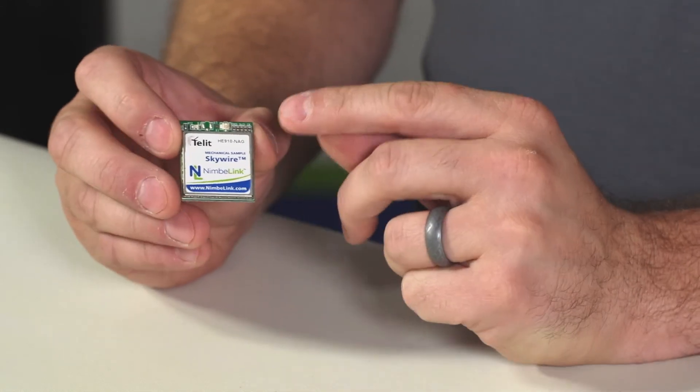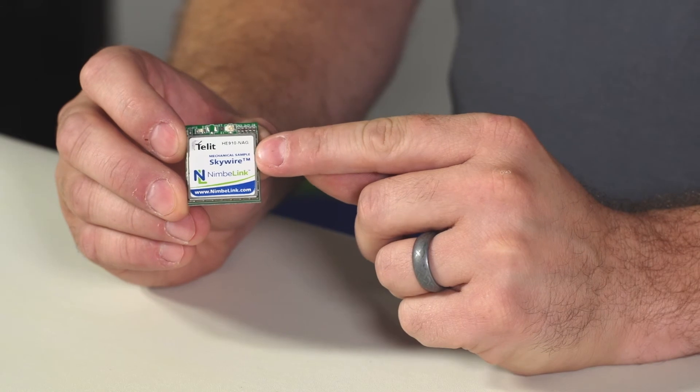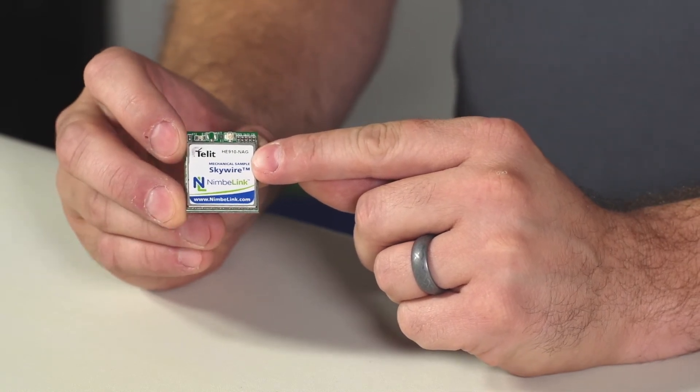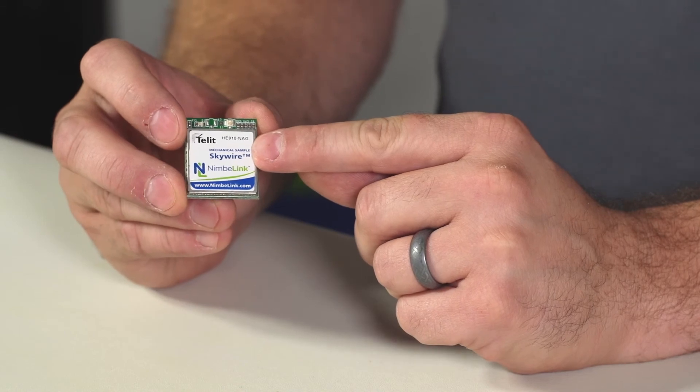On the front of the module printed on the label is the IMEI number which some cellular data carriers are going to ask you for in order to receive that sim card.